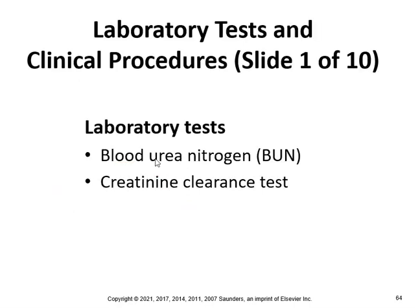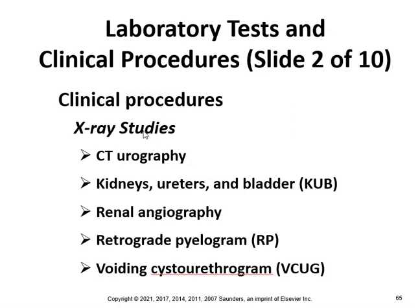Lab tests include BUN (blood urea nitrogen), creatinine clearance test, CT urography, kidneys-ureter-bladder imaging, renal angiography, retrograde pyelogram, and voiding cystourethrogram. In medical terminology, you need to know what these tests are, not necessarily how they work.